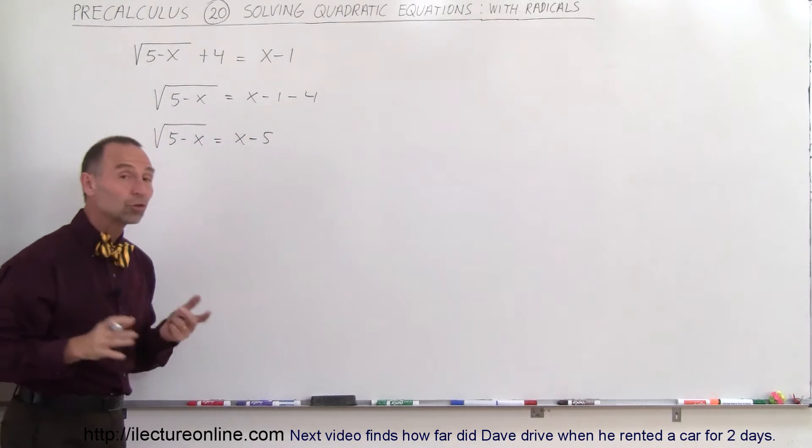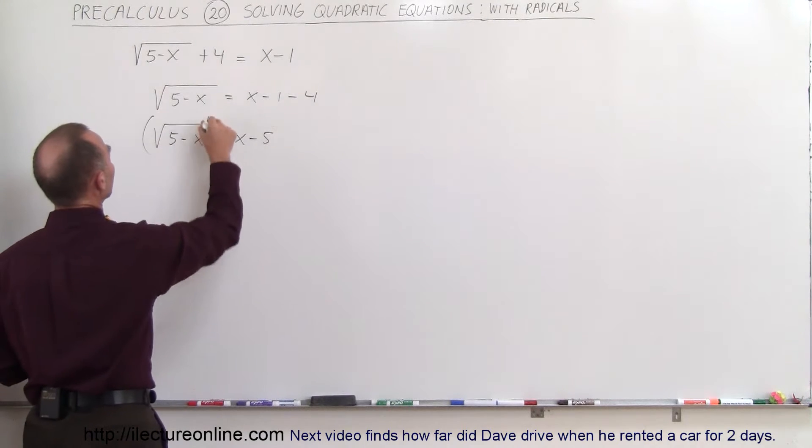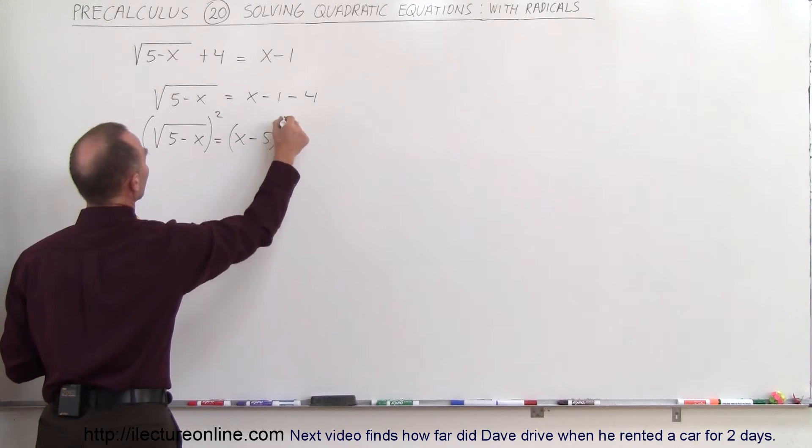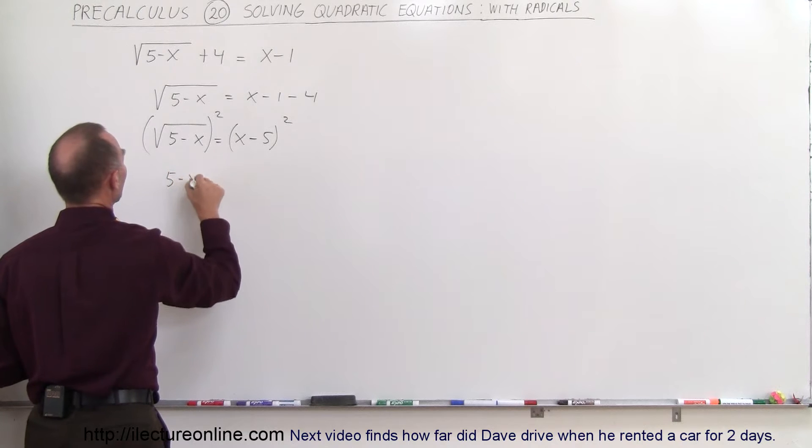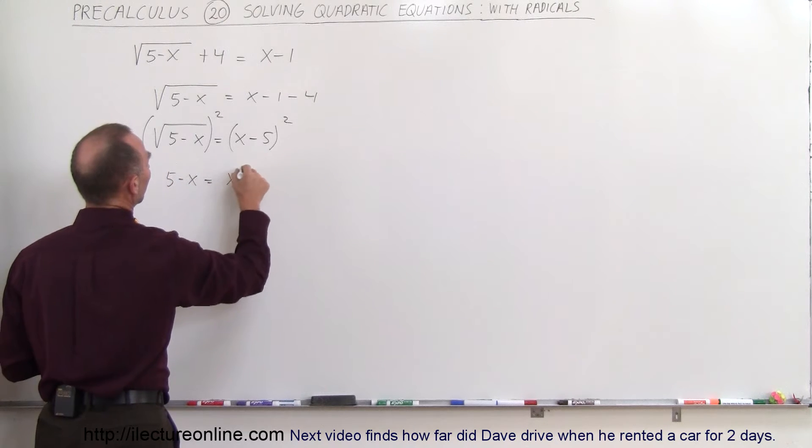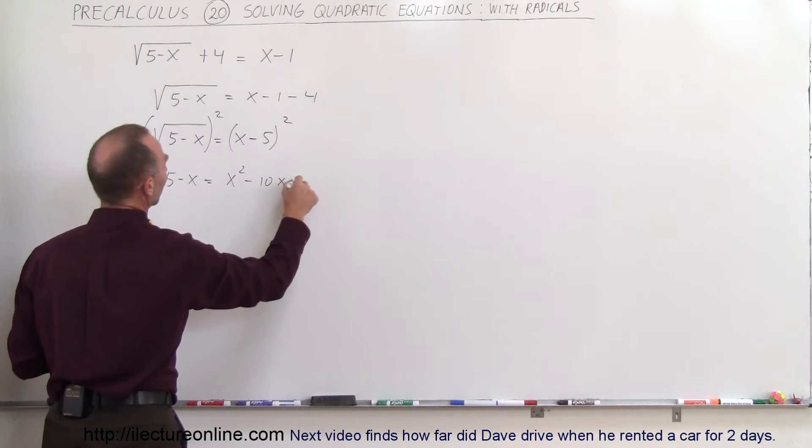The next step is we're going to square both sides. So we're going to square the left side and we square the right side. So we get 5 minus x is equal to x squared minus 10x plus 25.